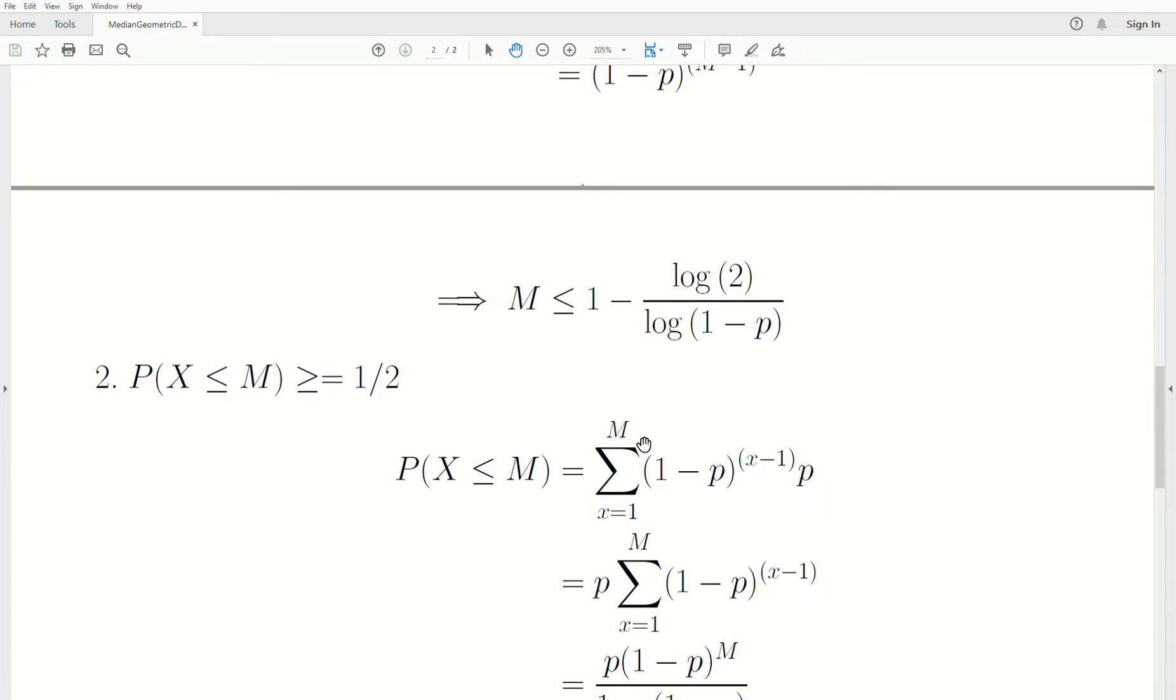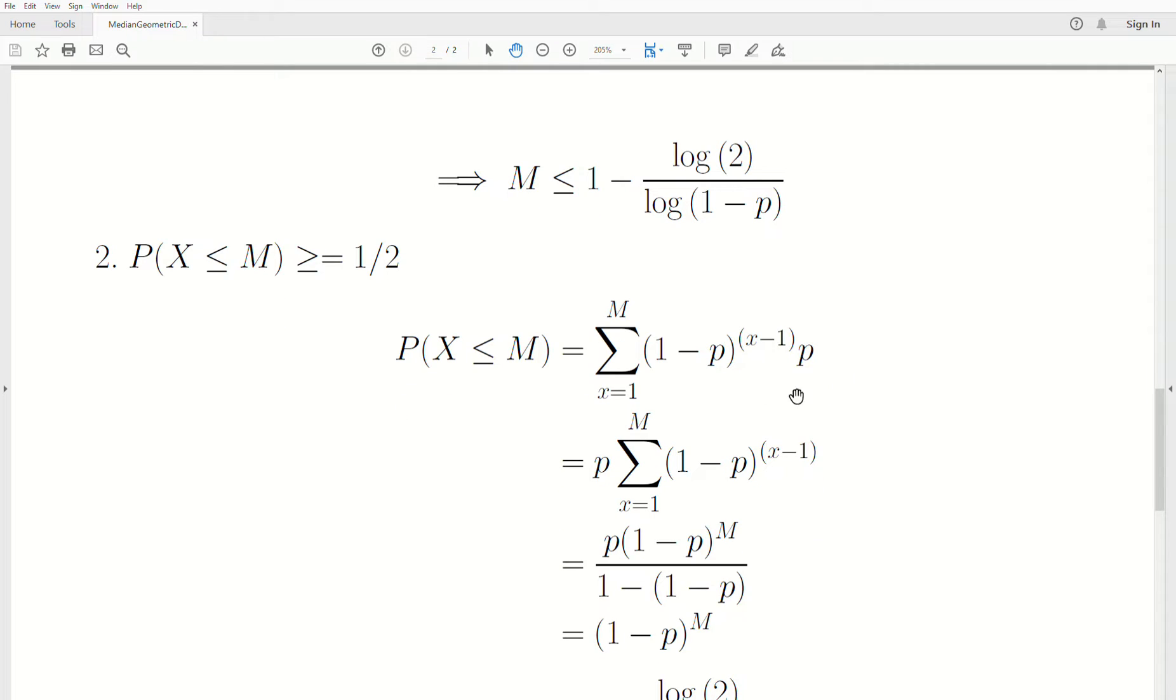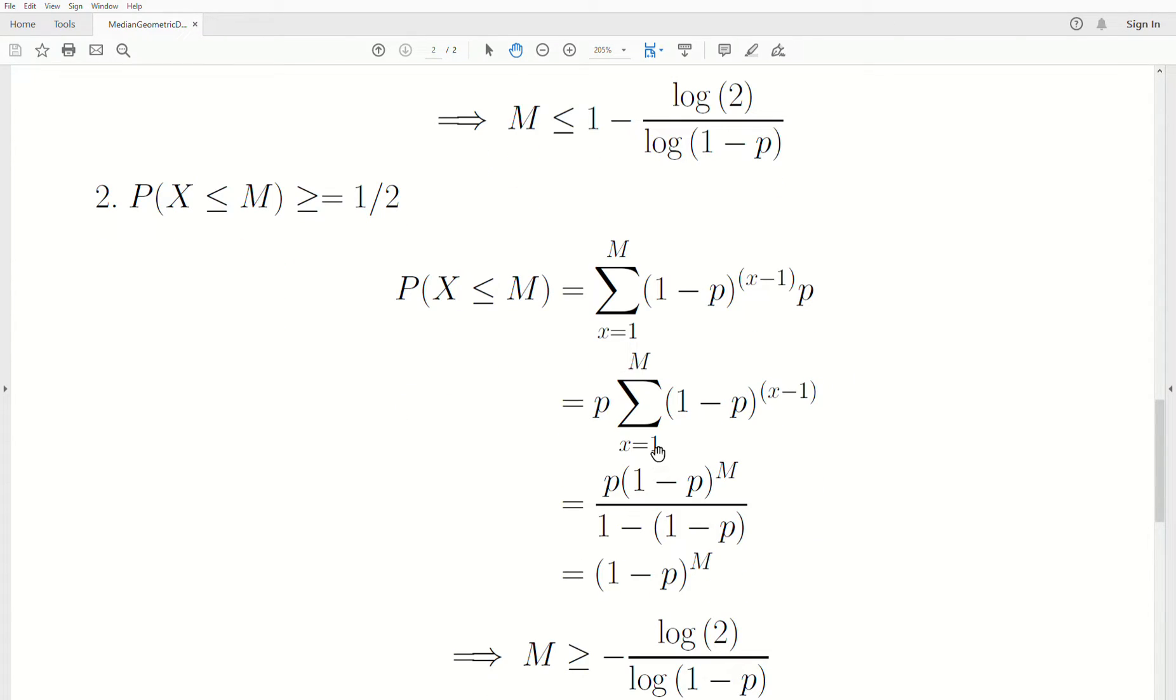P is not part of the index, so it can be taken out front. This is a partial sum of a geometric series and it has a specific formula, which is this. The denominator and this p cancel and we're left with (1-p)^M.